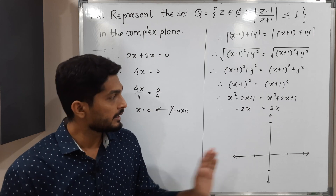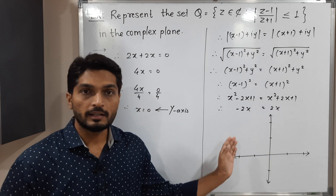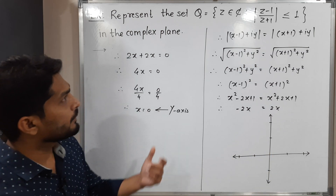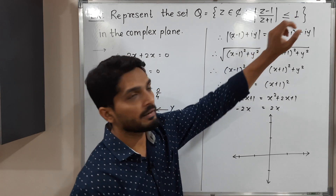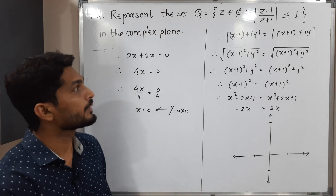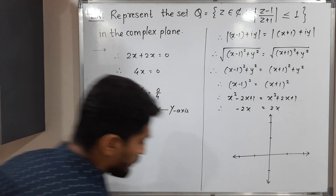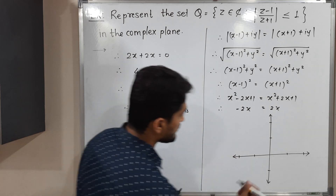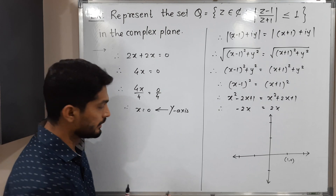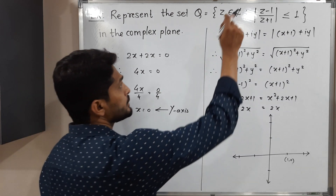The region either lies on the right-hand side of the Y-axis or on the left-hand side. Since we have an inequality, the actual region lies on one side. To determine which side, we consider a test point — let us take the point (1, 0), meaning Z equals 1.